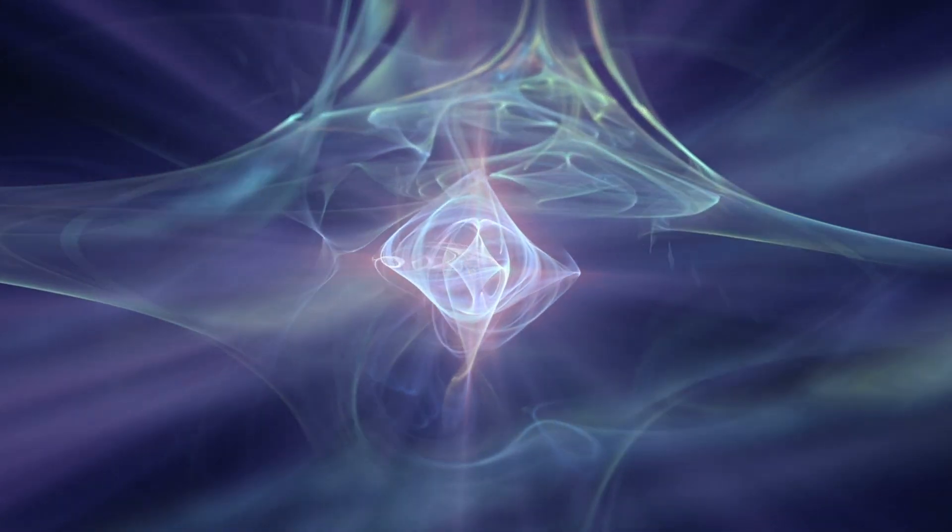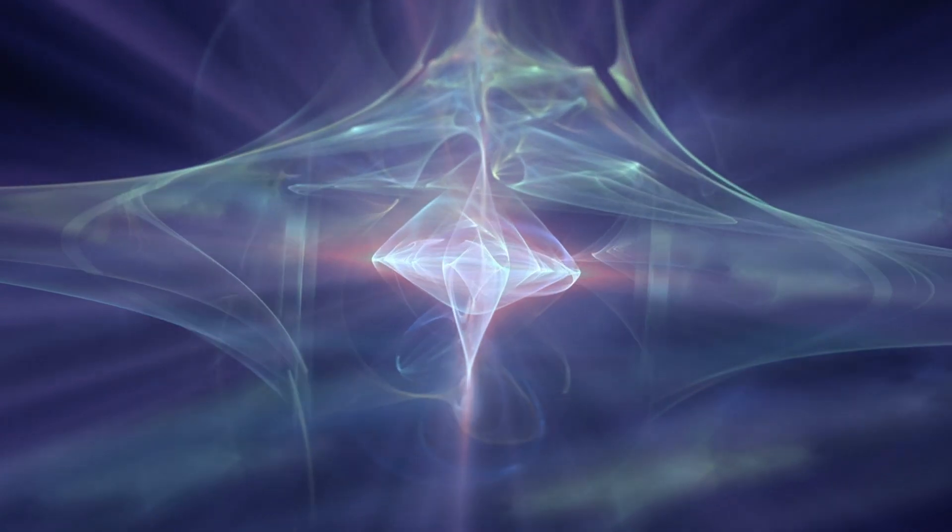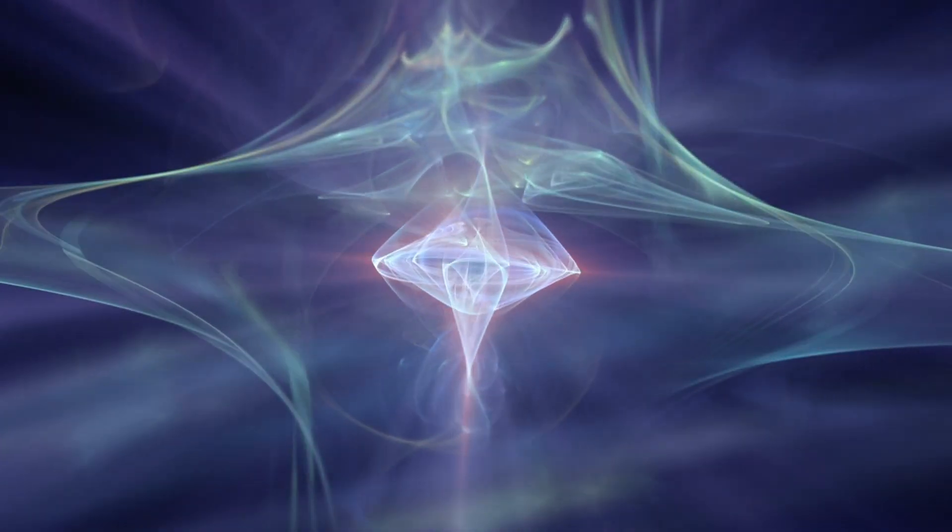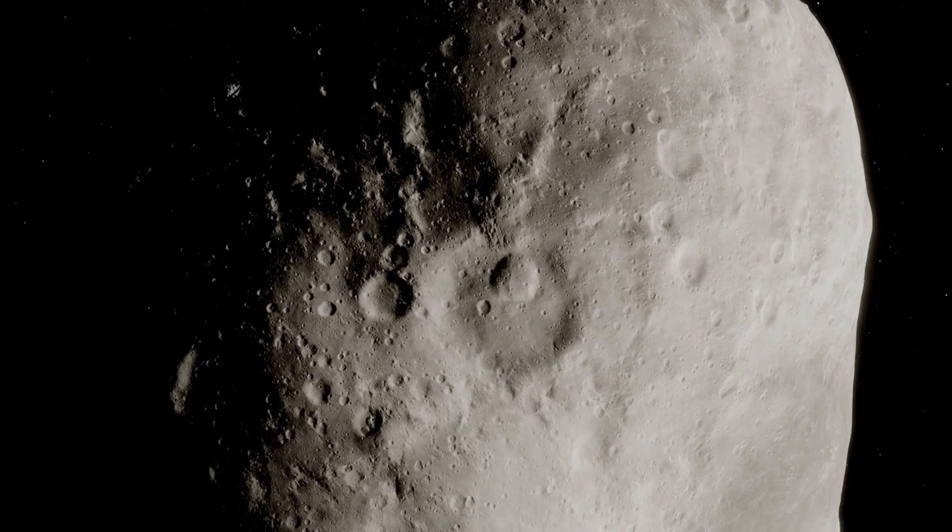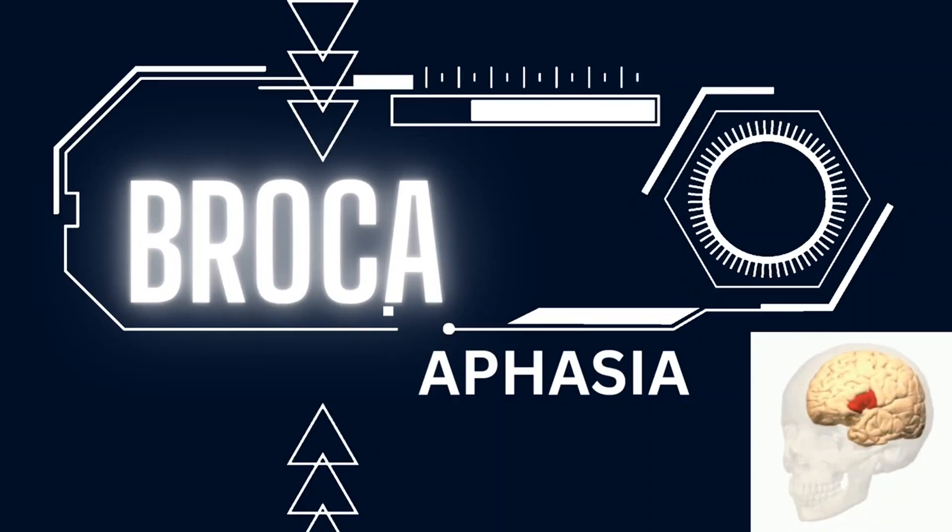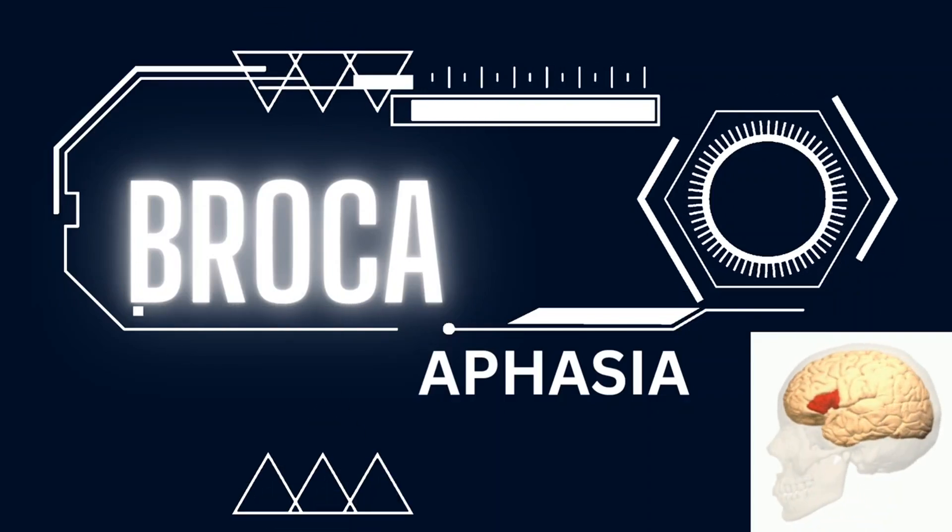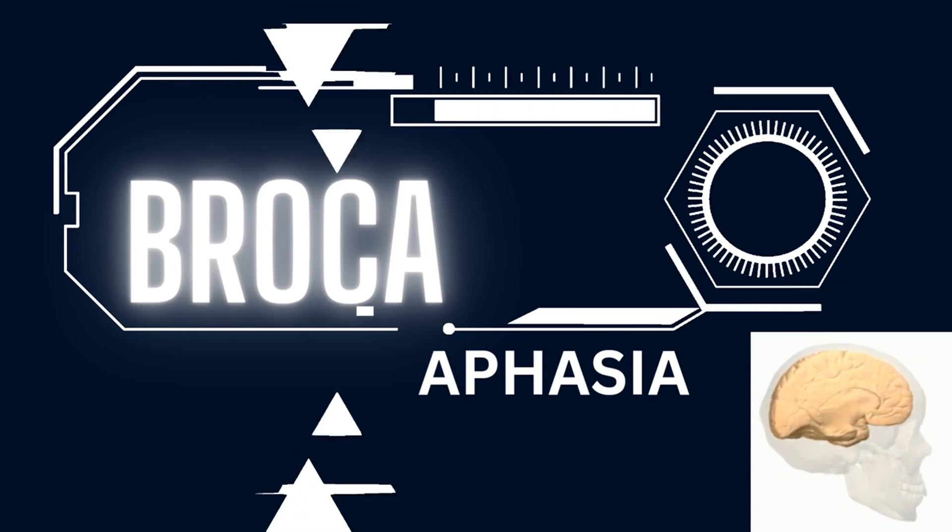Picture this: it's the year 2004 and astronomers around the globe are meticulously scanning the night sky when suddenly, they stumble upon a celestial interloper. Enter Apophis, a behemoth of an asteroid hurtling through the cosmos at a staggering speed. Named after the ancient Egyptian god of chaos and destruction, Apophis immediately captured the imagination of both scientists and the public alike.